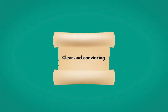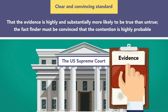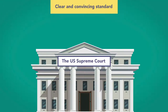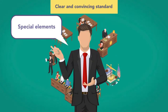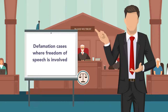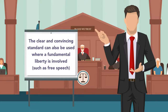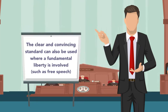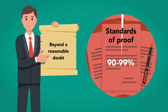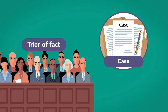Clear and convincing is a standard somewhere between beyond a reasonable doubt and preponderance of the evidence. The Supreme Court defined the clear and convincing standard as the evidence being highly and substantially more likely to be true than untrue, and the fact finder must be convinced that the contention is highly probable. As the higher standard of proof, the clear and convincing evidence standard applies only in civil cases that have special elements to establish or which have very high values. Cases where this standard may be appropriate include defamation cases where freedom of speech is involved, will contests and other inheritance cases, and cases involving important family decisions such as withdrawing life support from a terminal patient. Although not completely accurate, you may think of the standards as: beyond a reasonable doubt at 90–99%, preponderance of the evidence at 50% plus one, and clear and convincing at roughly 75%. But each case will be decided on the basis of how the trier of fact applies the burden to the evidence at hand.